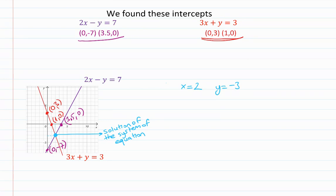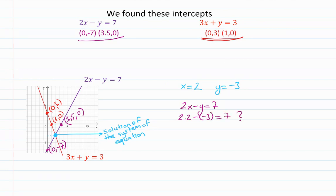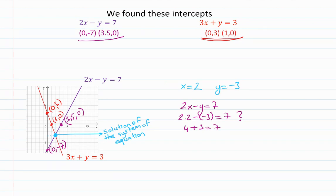We can read the solution from the graph. Let me verify in the purple equation 2x minus y equals 7: putting x equals 2 and y equals negative 3 gives 2 times 2 minus negative 3, which equals 4 plus 3 equals 7. It satisfies the purple equation.